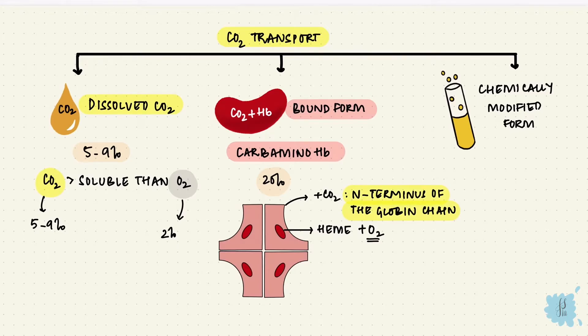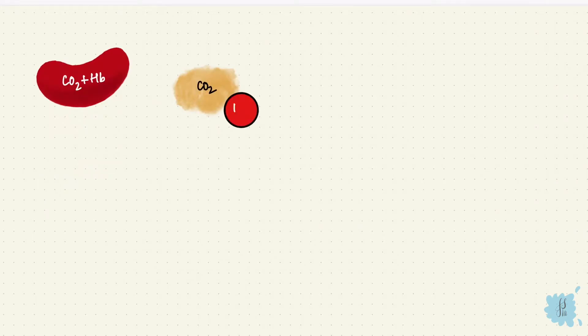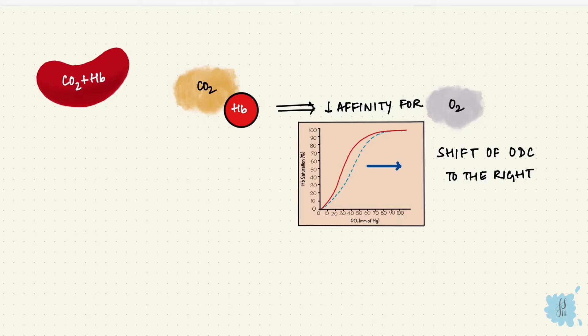The binding of carbon dioxide to hemoglobin reduces its affinity for oxygen, shifting the oxygen dissociation curve to the right. This is the Bohr effect.